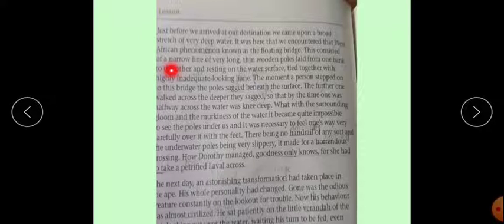That West African phenomenon known as the floating bridge. This consisted of a narrow line of very long, thin wooden poles laid from one bank to the other and resting on the water surface, tied together with highly inadequate rope. The moment a person stepped onto this bridge, the poles sagged beneath the surface. The further one walked across, the deeper they sagged, so that by the time one was halfway across the water was knee deep.